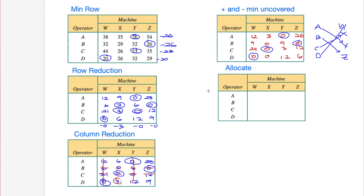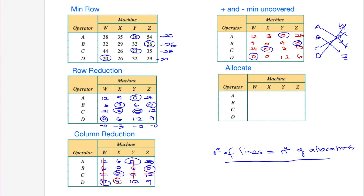What this proves is that if you go down the algorithm too far it won't make a difference - ideally you want to find when you can allocate as soon as possible, which is when the minimum number of lines equals the number of allocations. As soon as you can do that, you're free to allocate. The textbook says you can check at every stage, and that's technically true, but you'll often find you can't allocate until you've at least done the row and column reduction, so there's really no point checking before that.